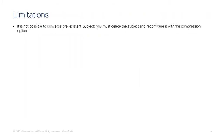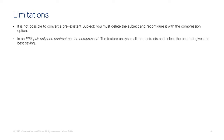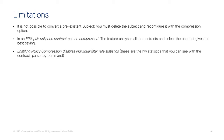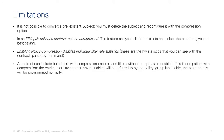Now for the limitations. If you have an existing subject without compression enabled, it's not enough to just modify the filters — you need to remove the subject and configure it again. Only one contract per EPG pair can be compressed. Regarding statistics, the individual filter rule statistics visible from the show policy manager CLI on the leaves are not accurate when compression is used, since they count statistics on a filter shared by multiple EPG pairs, so they're not supported in that context. A contract can include both filters with compression enabled and filters without — this is compatible, with compressed entries programming the policy group label table and uncompressed entries programming the regular policy cam.